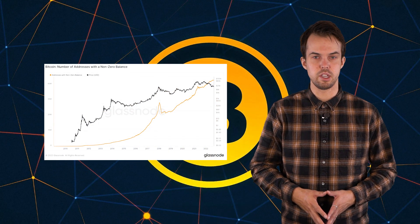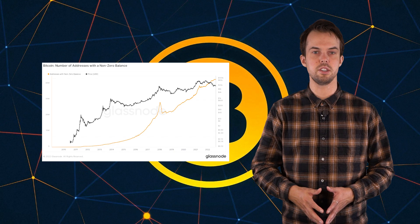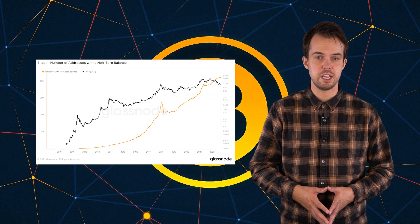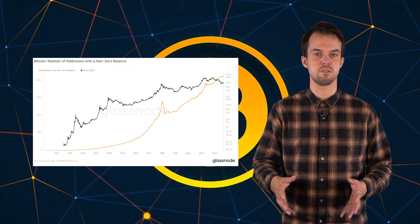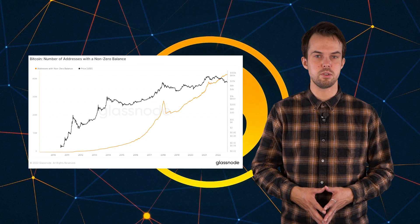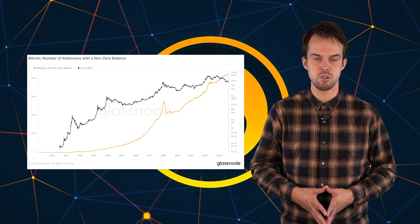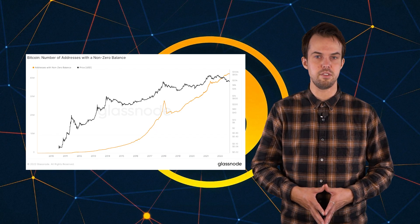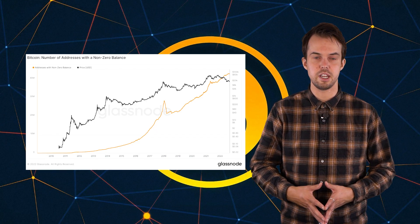First, network adoption. For this we'll use the chart which is Bitcoin number of addresses with a non-zero balance. The black line is the Bitcoin price and the orange line is the number of users with more than zero Bitcoin on their address. With network adoption you want to see the orange line increase regardless of price. This keeps buyers believing more and more in the long-term goal around Bitcoin and thus more users are joining the market. Normally around bear market periods we would see a lot of people leaving, but so far in 2021 and 2022 that has hardly happened — a sign of strength and conviction.